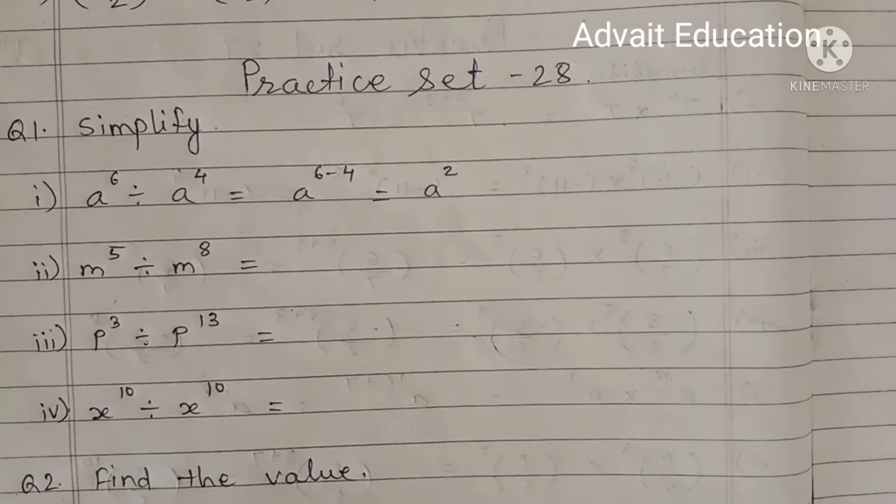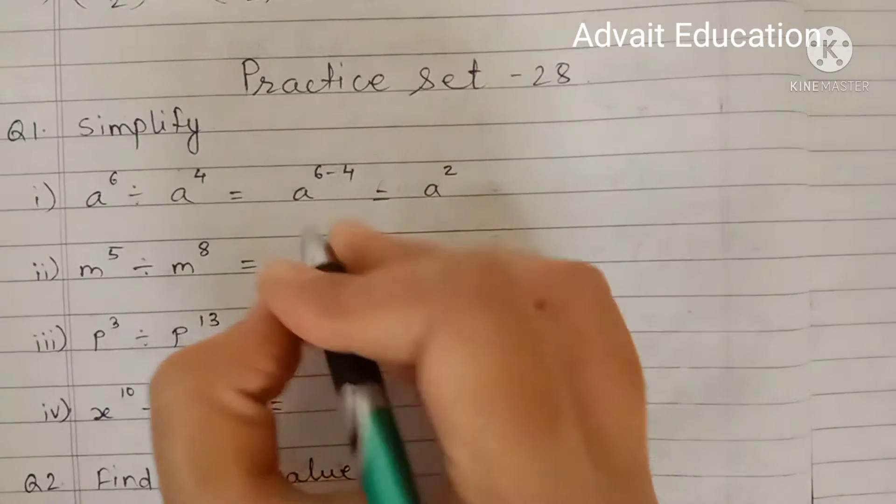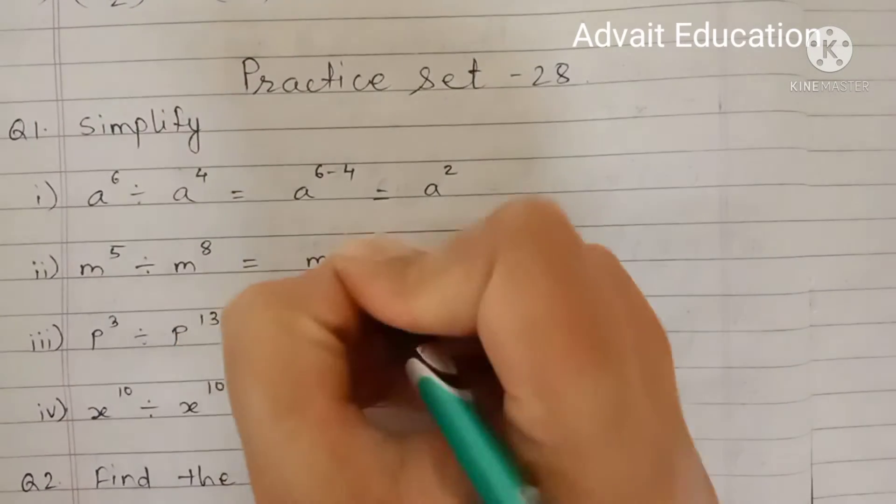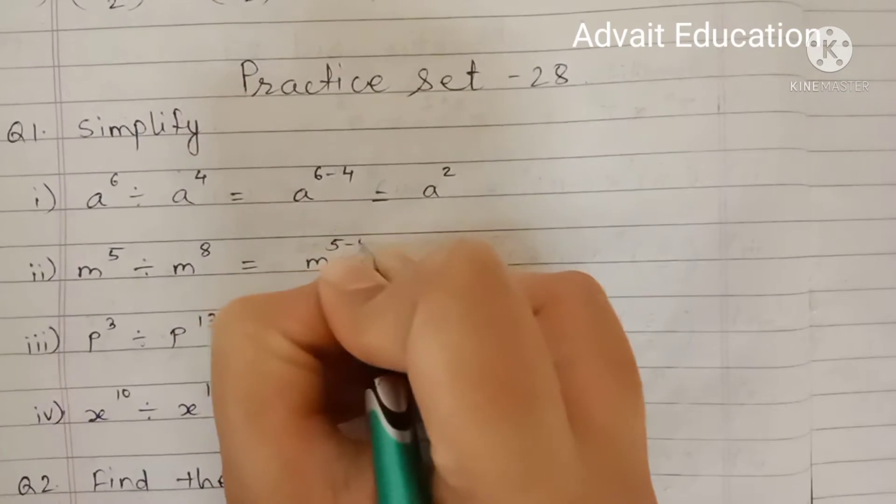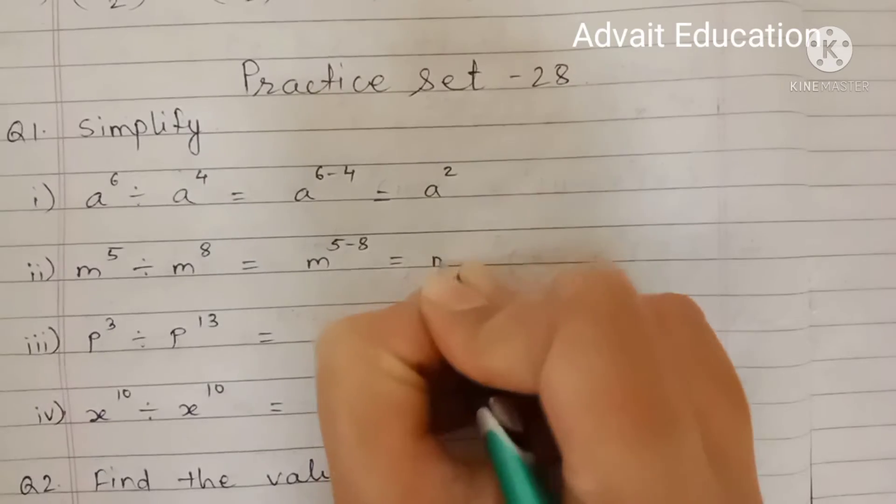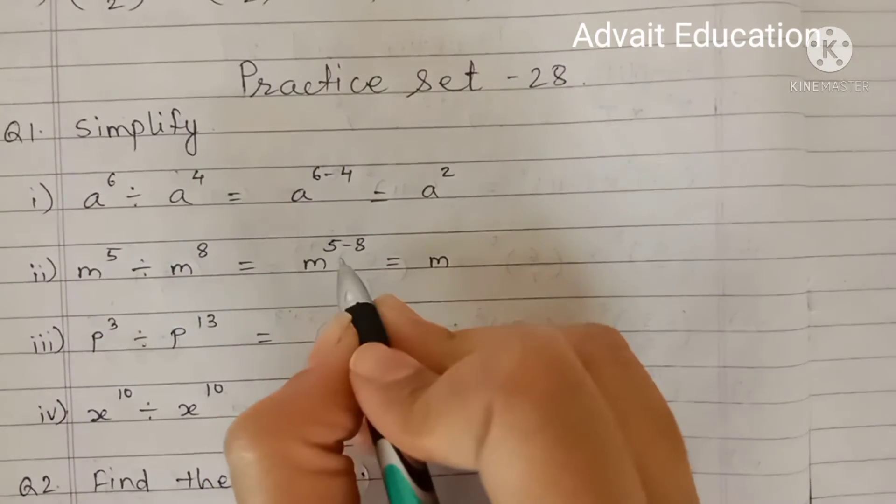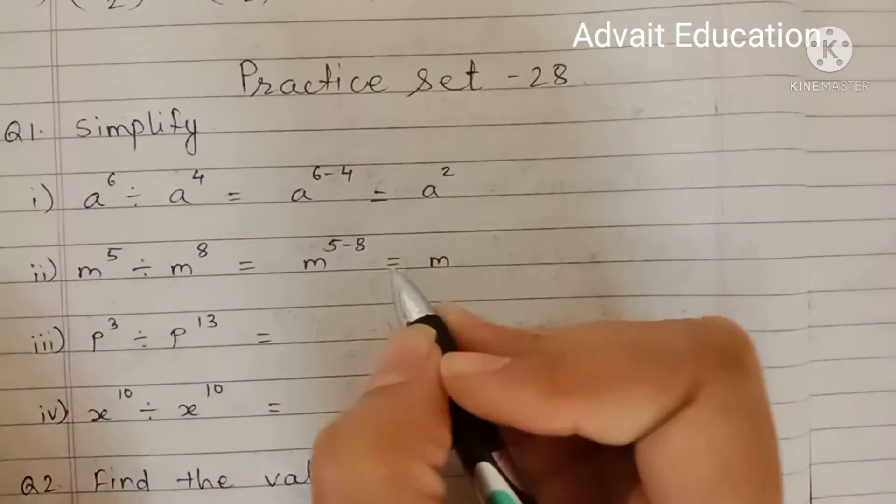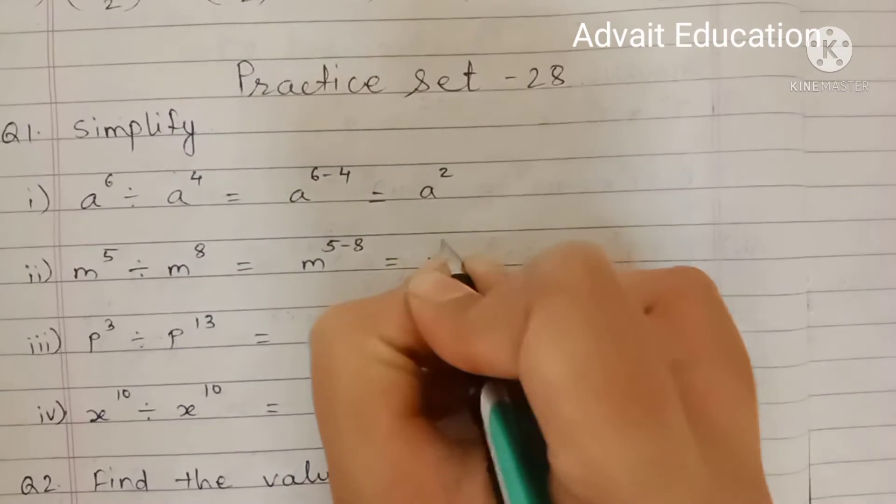Second, M raised to 5 divided by M raised to 8. Means M raised to 5 minus 8. M raised to, plus minus minus, and give the sign of the bigger number. Means minus 3.